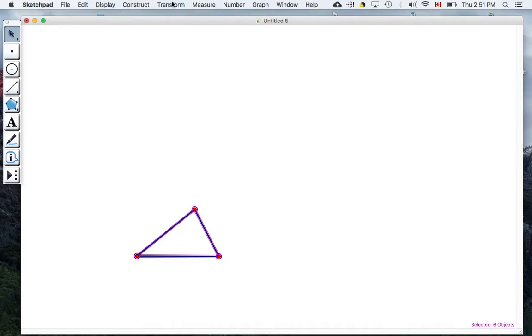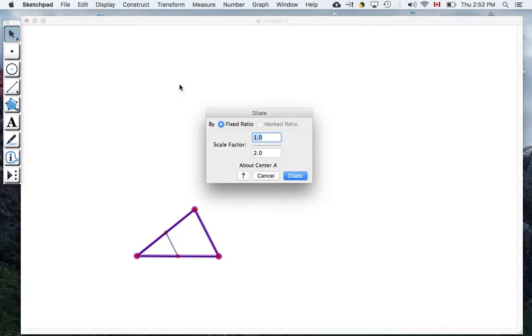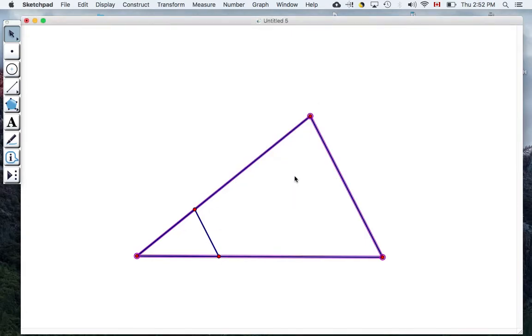Okay, so I go up to transform and I want to dilate that triangle and I want it to be a fixed ratio of three over one. So now it's three times the size and I hit dilate. So now I've got another triangle that is three times as big as this first one that I drew.